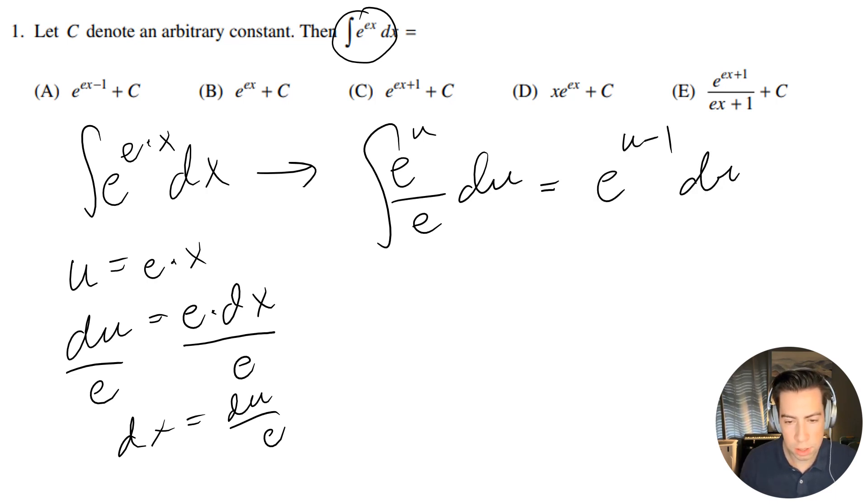And from here, if you want to make it look really nice, we can just do w equals u minus 1, therefore dw is going to be equal to du.